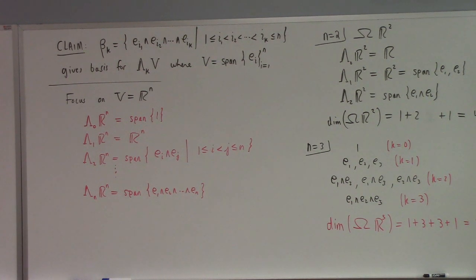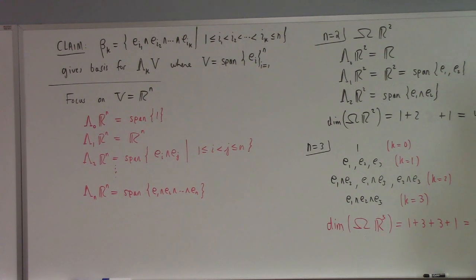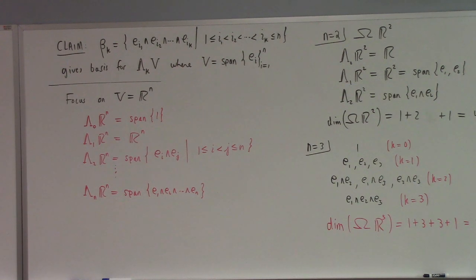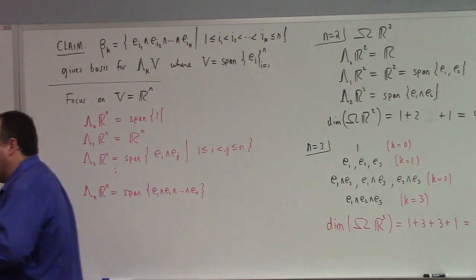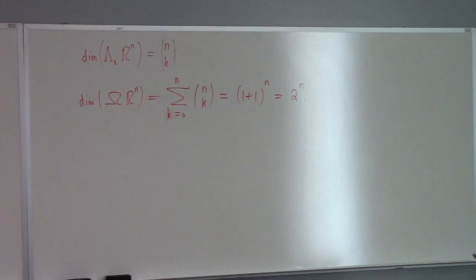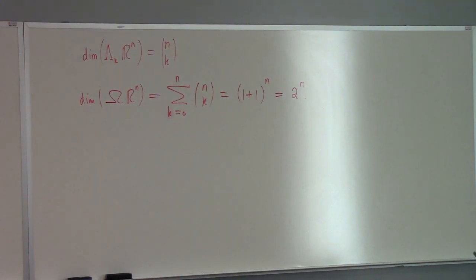It looks like Pascal's triangle. You can prove that generically the dimension of k-forms on R^n is n choose k. So the dimension of the exterior algebra on R^n is the sum from k=0 to n of (n choose k), which equals (1+1)^n = 2^n. For a 2-dimensional space, the exterior algebra is 4-dimensional; for 3-dimensional, it's 8-dimensional.